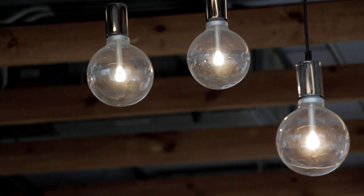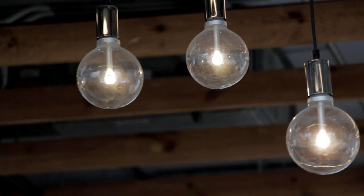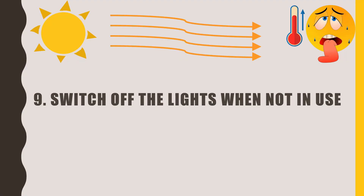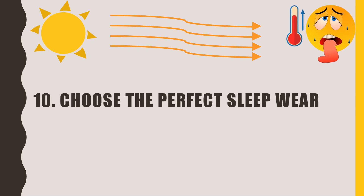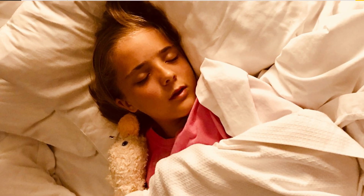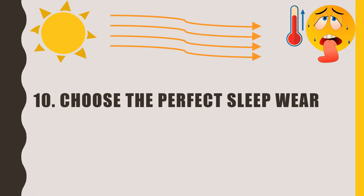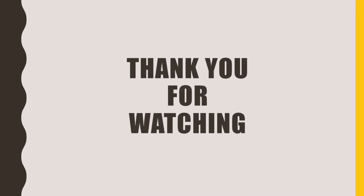Tip number nine is to switch off lights when not in use. Switching off unnecessary lights not only reduces heat but also saves your electricity bill. Replace your bulbs with LED lights, as they do not spread heat and are energy efficient. Tip number ten, our last tip, is to choose the perfect sleepwear — just like bed sheets, use sleepwear made of cotton, as it absorbs sweat and keeps body temperature low. Those were the 10 tips to survive without air conditioning in summer. If this video was useful, click the like button and subscribe to Civil Engineering Forum. Thank you for watching.